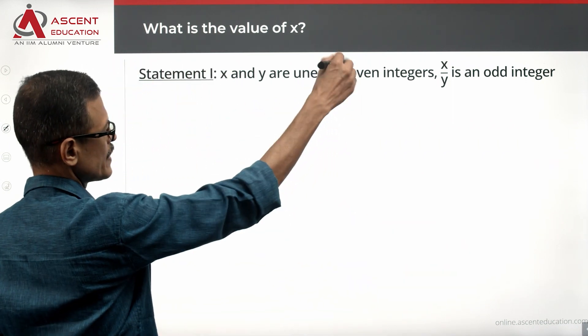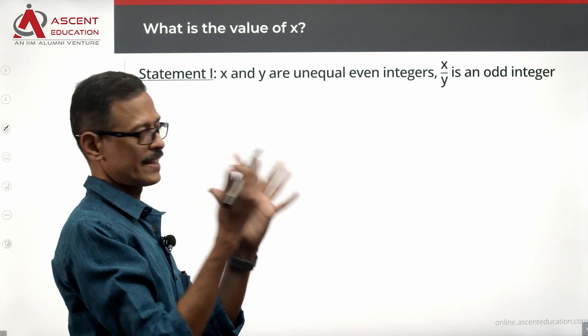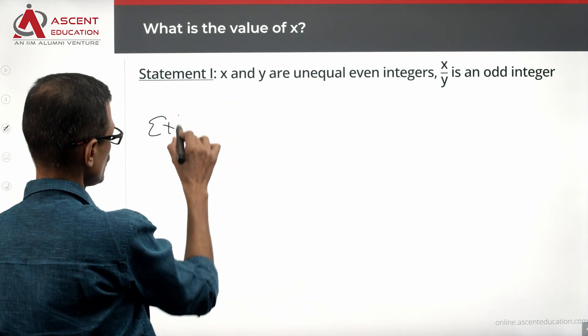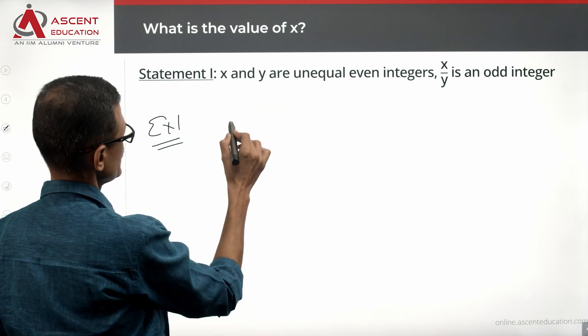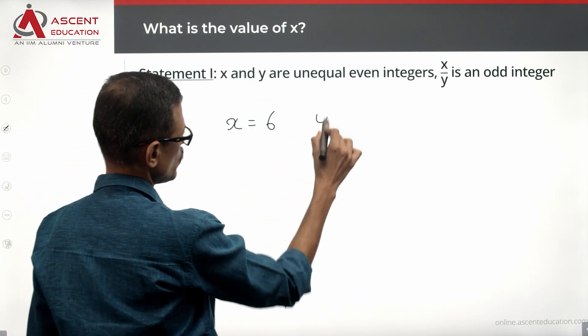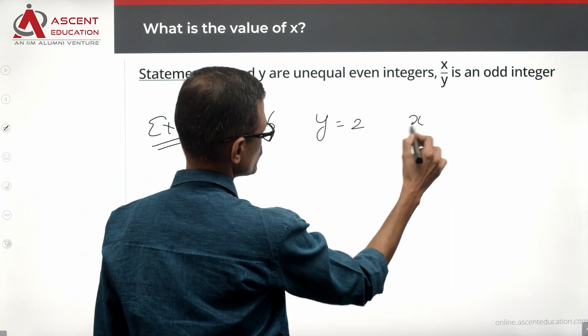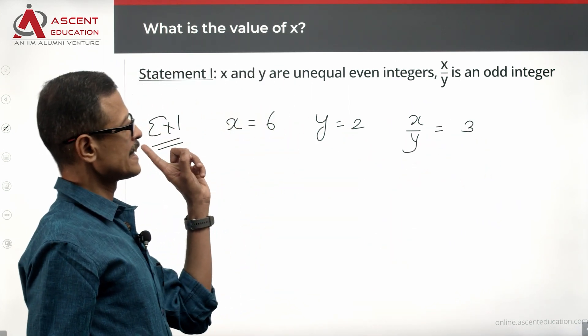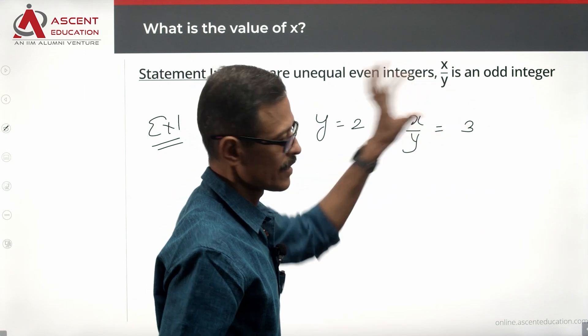And clearly, X has definitely got a magnitude which is greater than Y. So, for example, X is equal to 6, Y is equal to 2, X by Y is equal to 3. They are unequal even integers. X by Y is an odd integer.